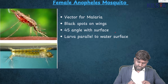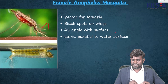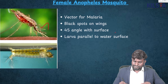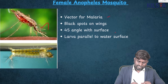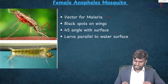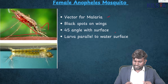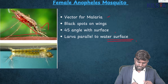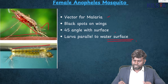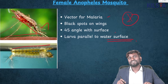This important image is going to be female Anopheles — the vector for malaria. Black spots are seen on the wings especially. It has a 45-degree angle sitting position. The larva is parallel to the water surface. These are the important points to remember for the female Anopheles mosquito.